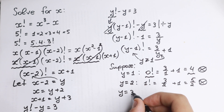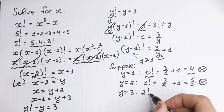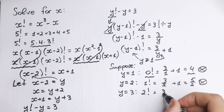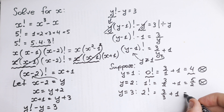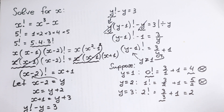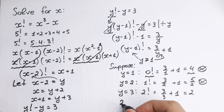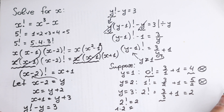Let's try y equals 3: (3 minus 1)! equals 3 over 3 plus 1. That gives 2! equals 1 plus 1 equals 2. And indeed 2! equals 2, since 1 times 2 equals 2. This is correct!